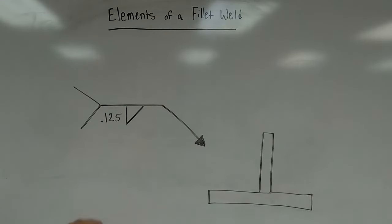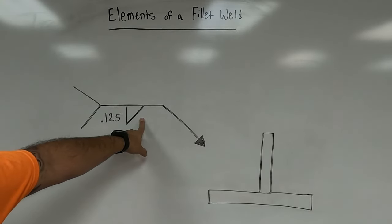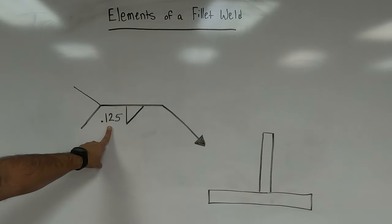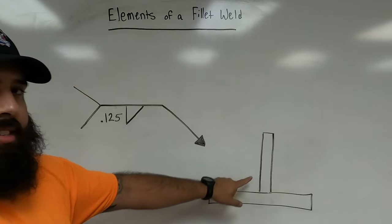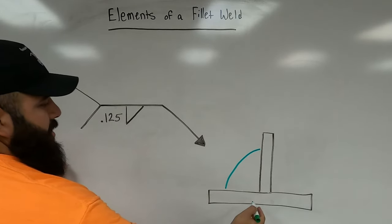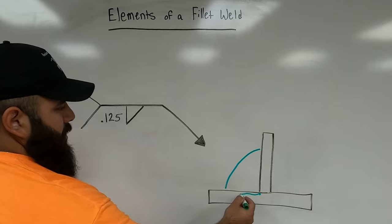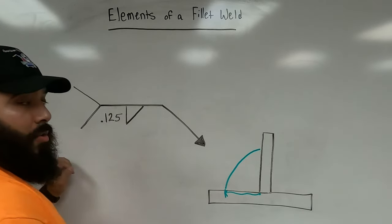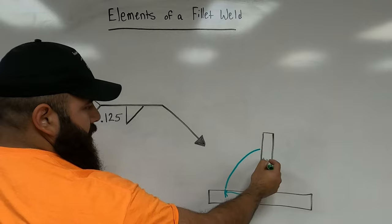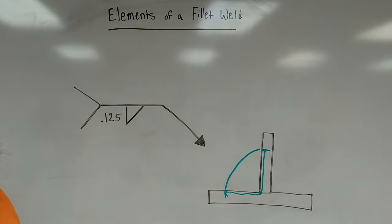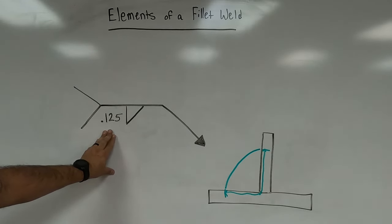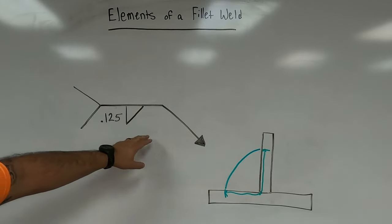One more quick example: if the size specified is 0.125 — which equals one-eighth of an inch — when we deposit our fillet weld, the leg from the root to one toe equals one-eighth of an inch, and the other leg from the root to the other toe also equals one-eighth of an inch. Whatever size is specified, think of it as the length of the legs of your fillet weld.